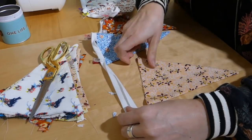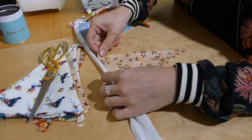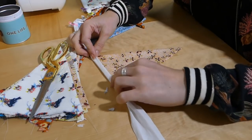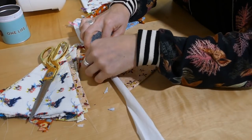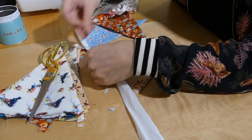So just open the bias tape, put the short end of the flag inside and attach the flag with a clip or a pin. This is the fun part where you can think about the colors and the patterns.